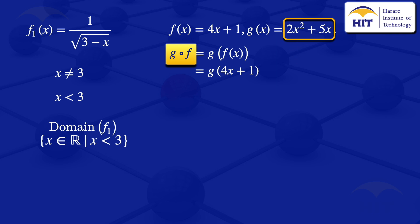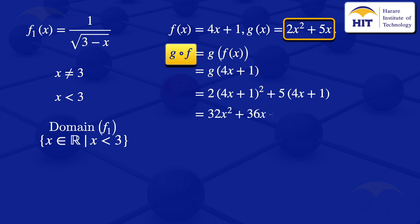This gives us 2 multiplied by (4x + 1)² plus 5(4x + 1), which simplifies to 32x² + 36x + 7. That is the composition of g and f.